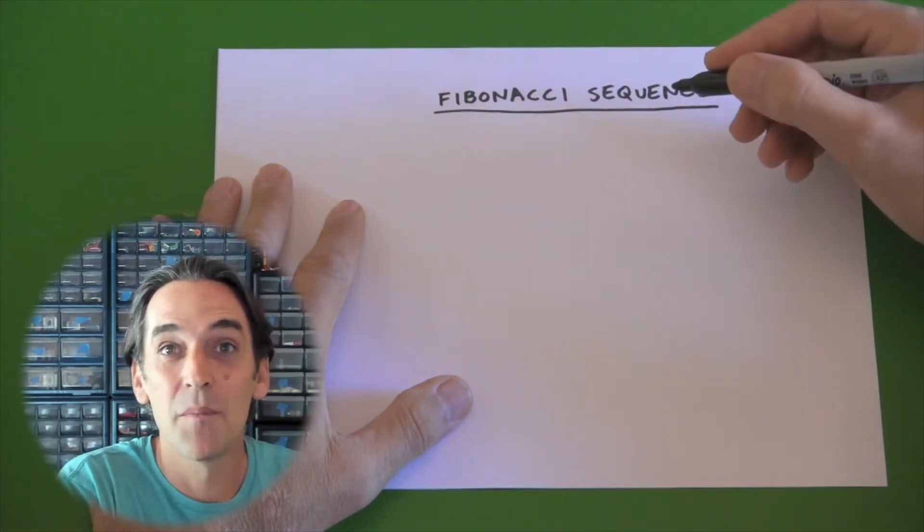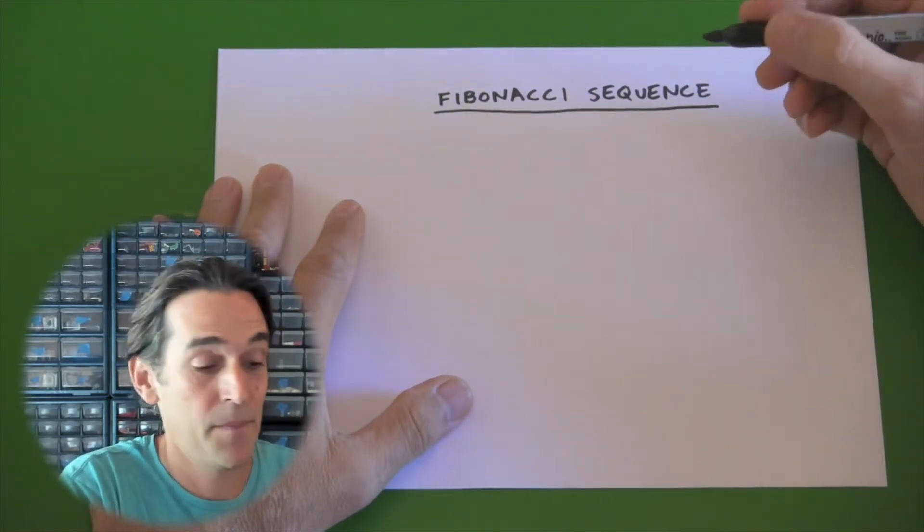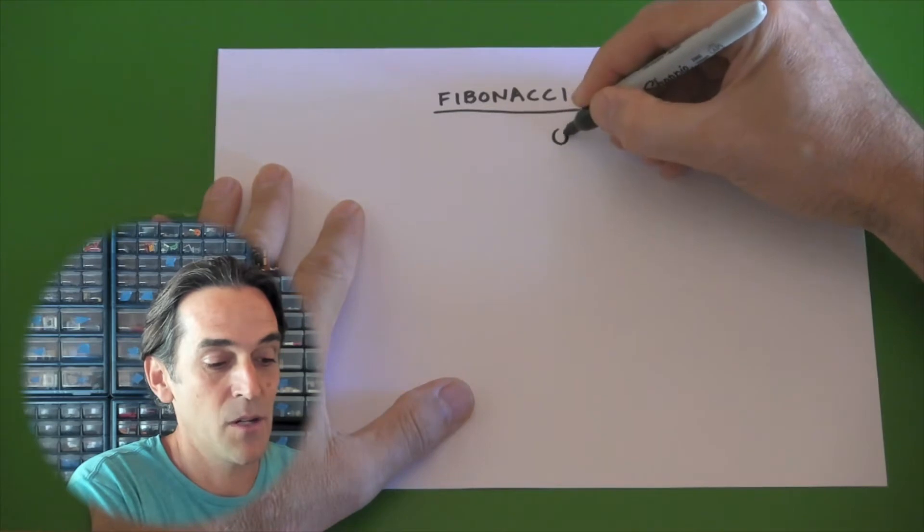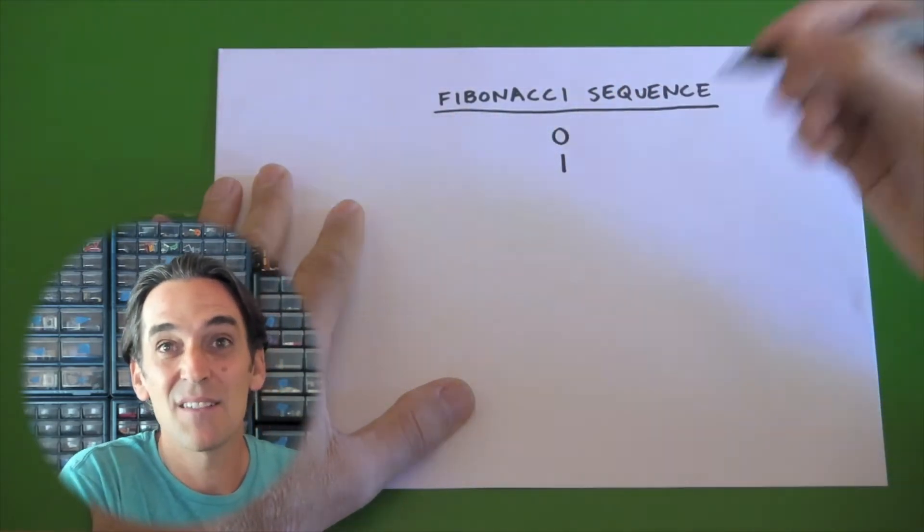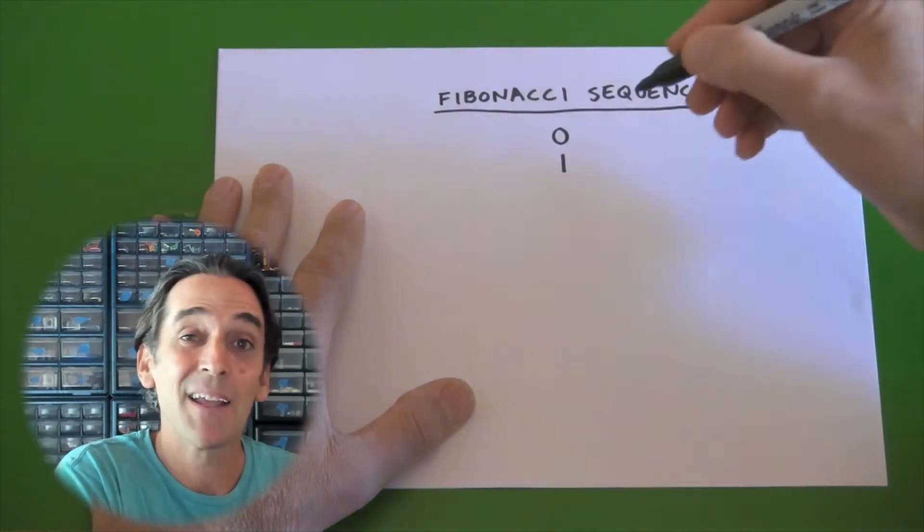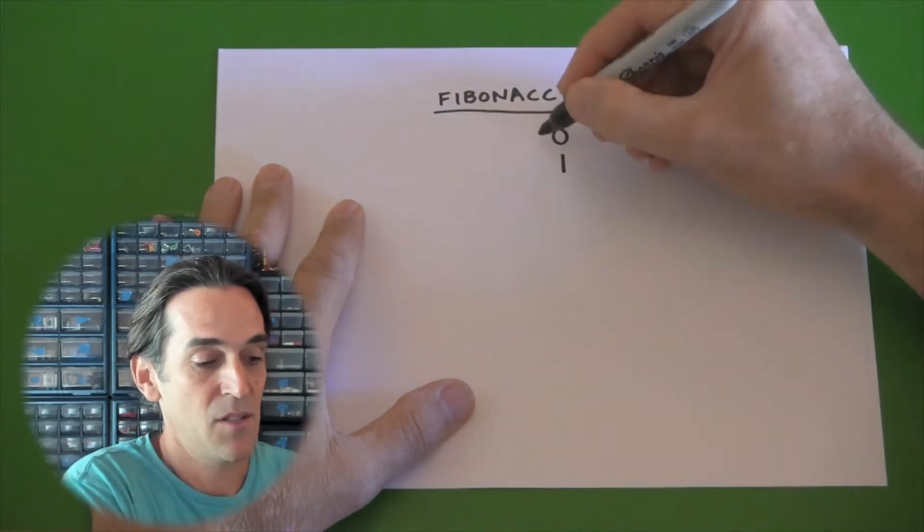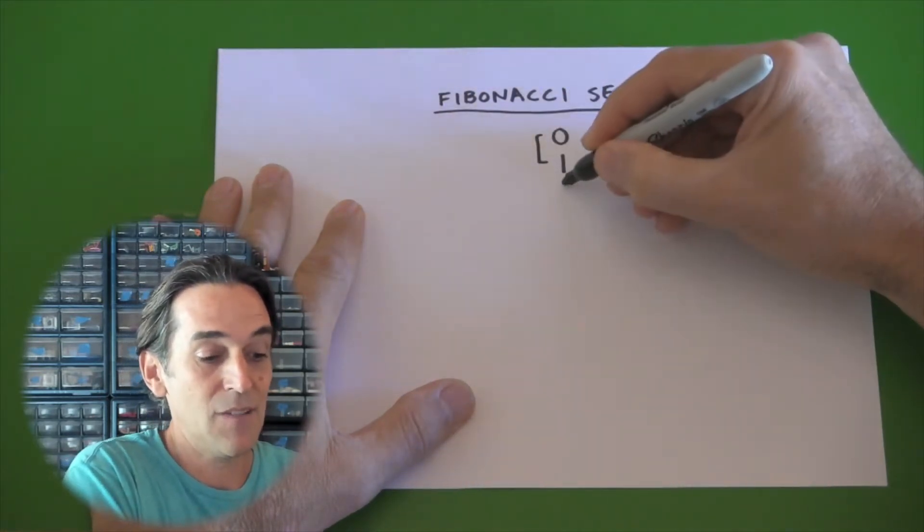The Fibonacci sequence is a pattern of numbers that grows in an interesting way. If we start with the number 0 and go to the number 1, every number next in the pattern is made by adding up the previous two numbers. So 0 plus 1 gives you 1 again.